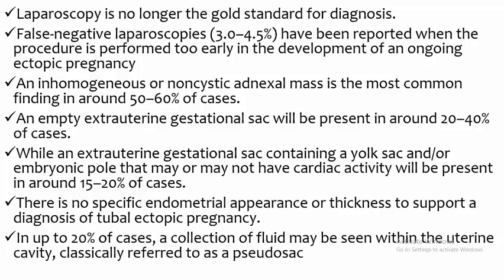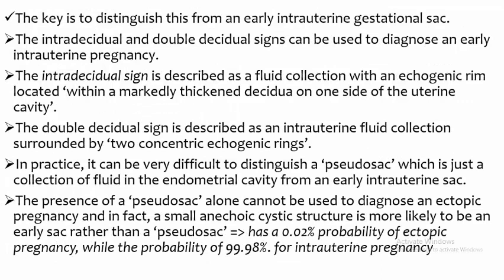There is no specific endometrial appearance or thickness to support a diagnosis of tubal ectopic pregnancy. In up to 20 percent of cases, a collection of fluid may be seen within the uterine cavity, classically referred to as a pseudo-sac. The key is to distinguish this from an early intra-uterine gestational sac. The intra-decidual sign is described as a fluid collection with an echogenic rim located within the decidualized endometrium. The double-decidual sign is described as an intra-uterine fluid collection surrounded by two concentric echogenic rims.